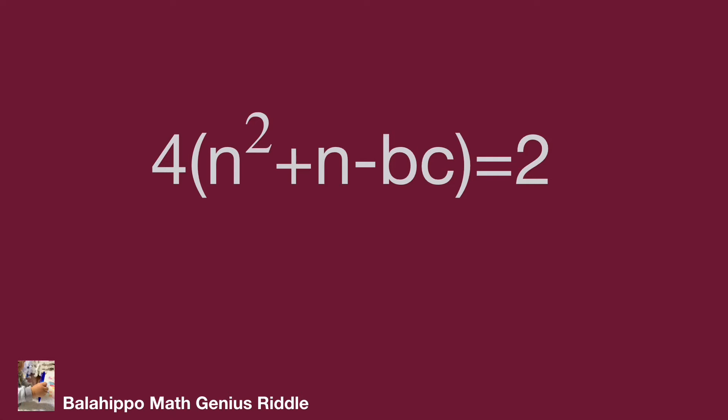We know n, b, c are positive integers. So n squared plus n minus bc is an integer. Then there is no solution to fulfill this equation, as the left side is divisible by 4 but the right side is 2. Therefore, there is no positive integer solution A, B, C to meet our question.